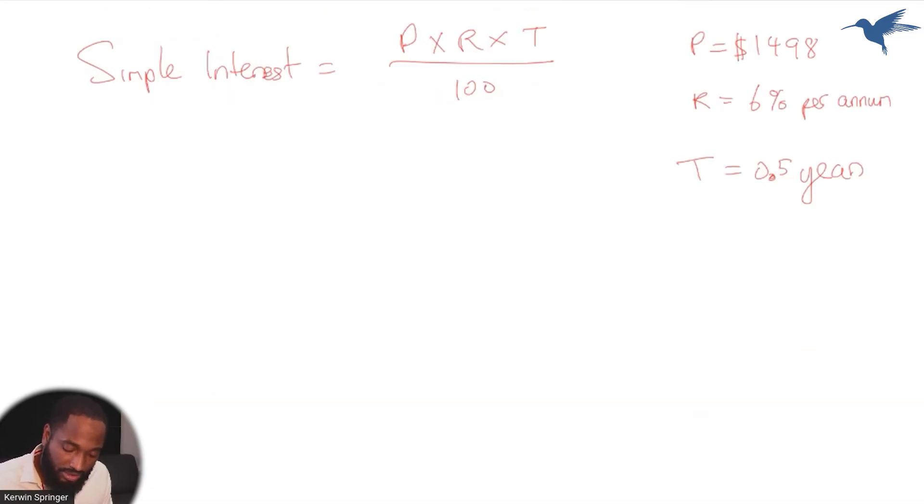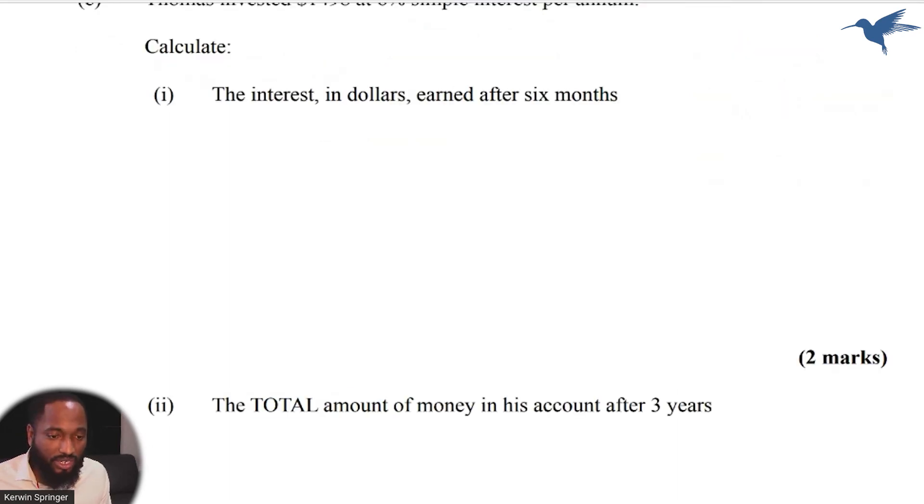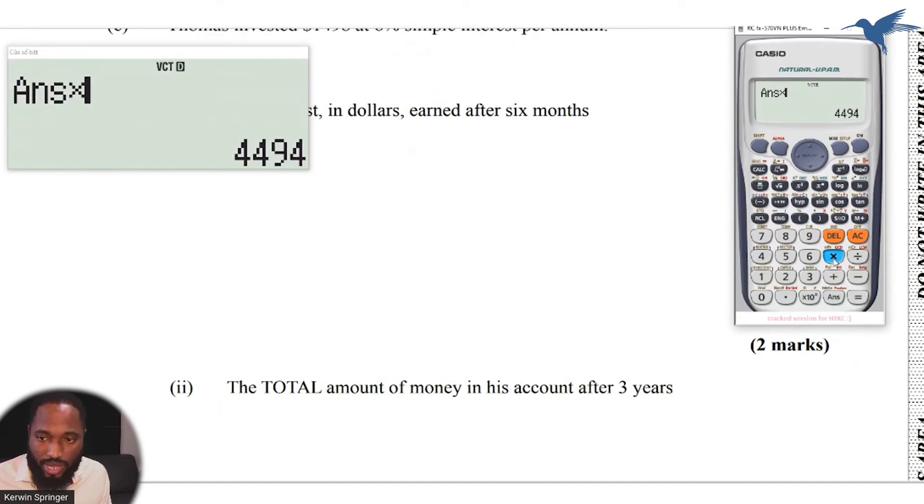And instead of 0.5, this time it's actually three. So I know last time I got $44.94 after half a year, so how many of that in three years? Six, right? So it stands to reason that I just multiply the last number by six. But if I were you, I would substitute and work out everything again so that you could be 100% sure, and then double check by multiplying this by six. Or 0.06. I'm really multiplying by six here because I forgot to divide by 100 before.